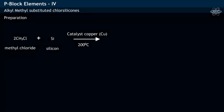Methyl chloride reacts with silicon at 200 degrees Celsius in the presence of a copper catalyst, resulting in the formation of dimethyl chlorosilane with the structure shown.